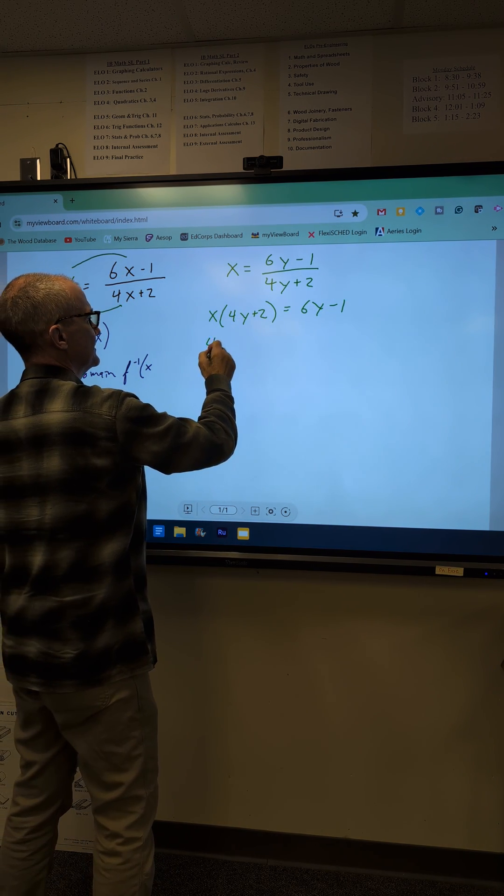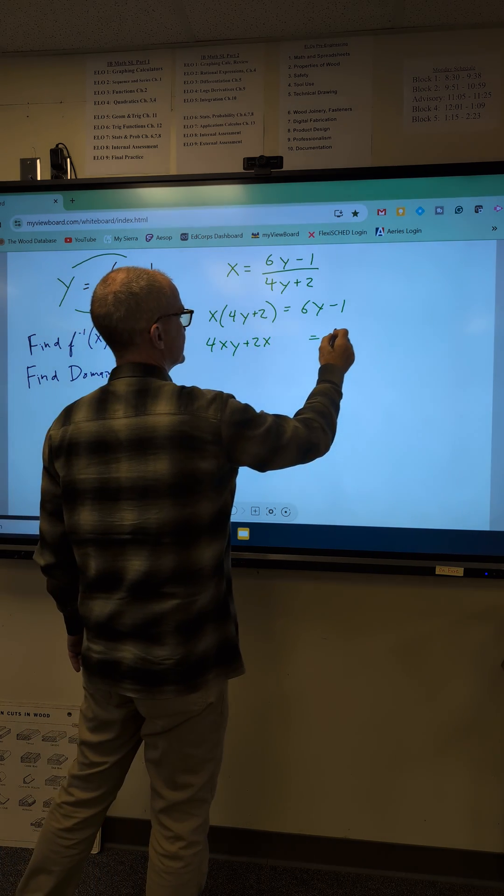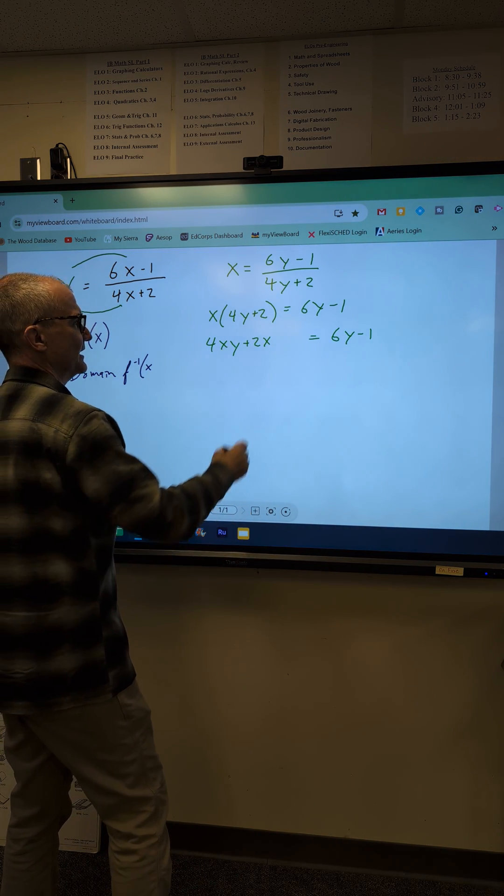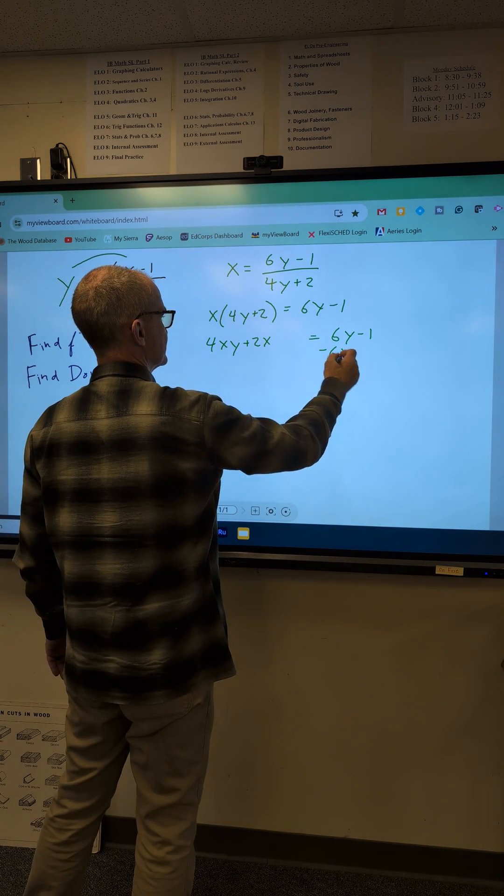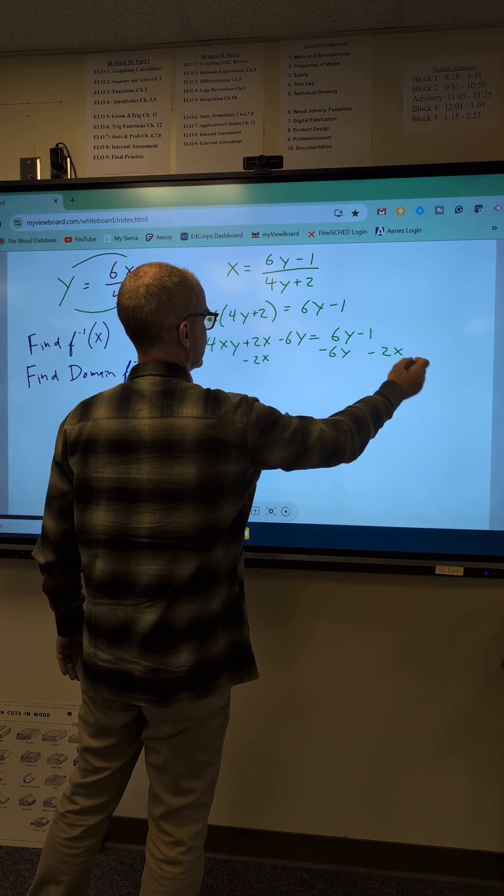Distribute that through the quantity, 4xy plus 2x is equal to 6y minus 1. All my y's on the left, everything else on the right, so I'm going to subtract 6y from both sides, subtract 2x from both sides.